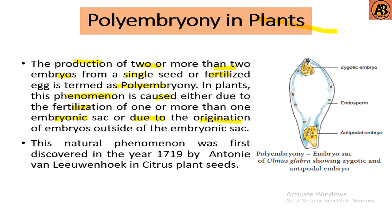This natural phenomenon was first discovered in 1719 by Antony van Leeuwenhoek in citrus plant seeds. Here you can see the polyembryony sac of Ulmus glabra, showing zygotic and antipodal embryos.